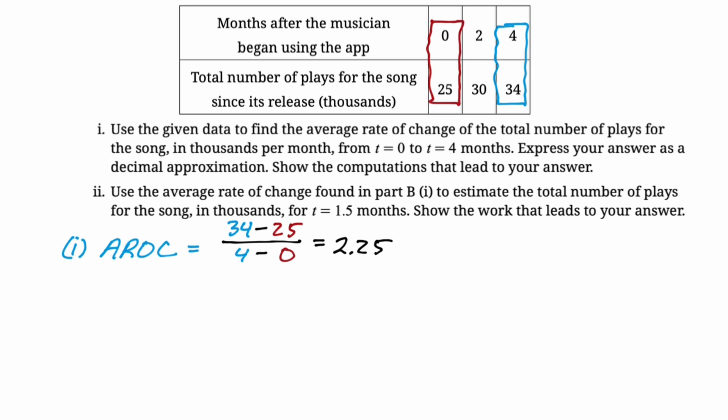Now, the next thing that we want to do is we want to use the average rate of change found in part B to estimate the total number of plays for the song in thousands for T equals 1.5 months. Show the work. So this basically comes down to writing the equation of a line and plugging 1.5 into it. So I'm going to call it the equation of the line. It's a secant line because it goes through two things. The average rate of change is in thousands per month. I meant to mention that. So here we go. We're finding a secant line. I'm just going to use point slope. I'm going to use the slope 2.25 and the point 0 comma 25.